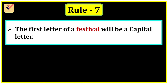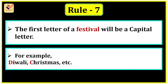Rule 7: The first letter of a festival will be a capital letter. For example: Diwali, Christmas, etc. Diwali is a festival — the first letter D is capital. In Christmas, the first letter C is capital.